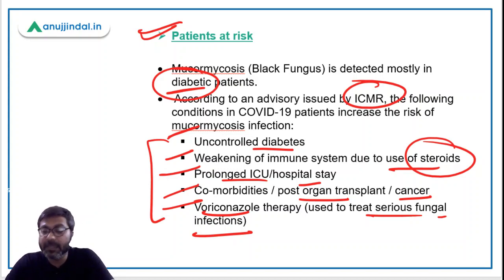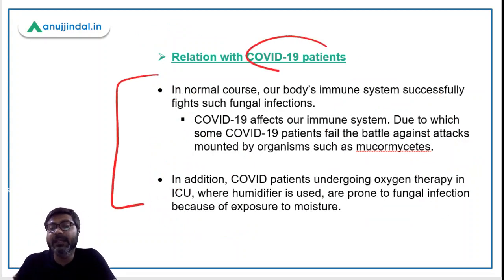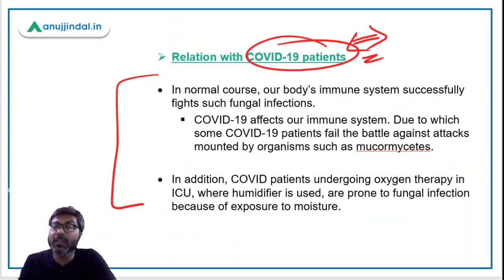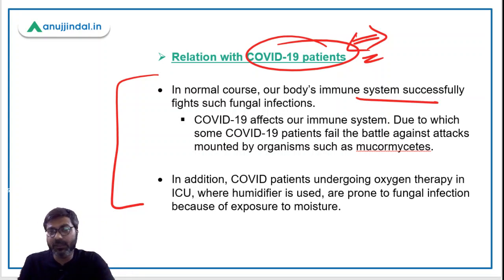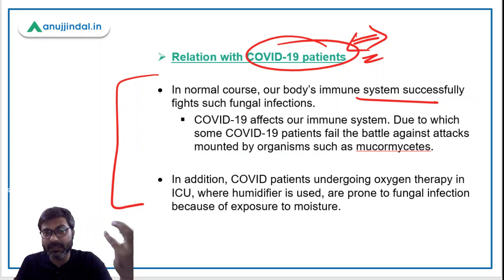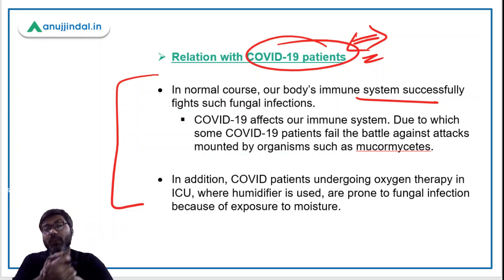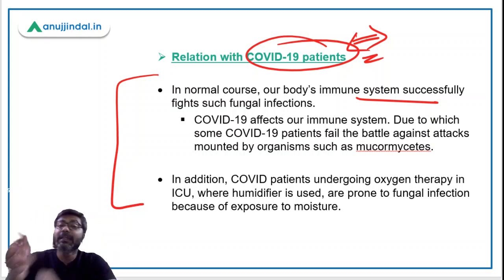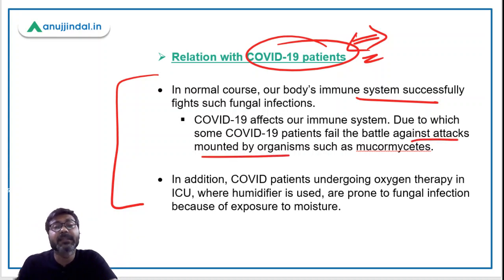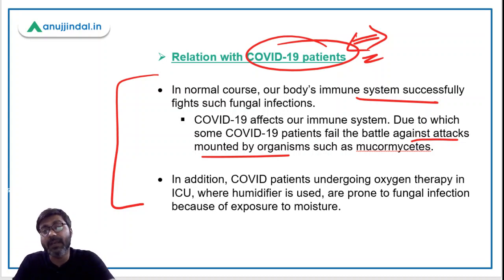What is the relation of black fungus with COVID-19 patients? The reason is simple — in normal course, our body's immune system successfully fights against fungal infections. But during COVID-19 infection, coronavirus affects and weakens our immune system, due to which some COVID patients fail to fight off attacks by the fungus. Some patients have their immune systems severely weakened because of COVID.